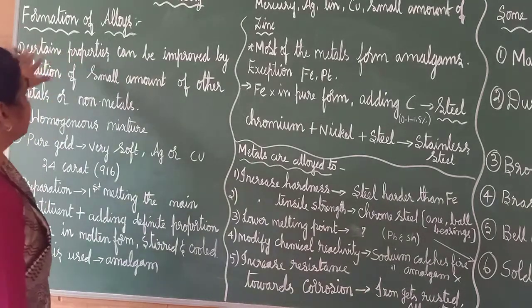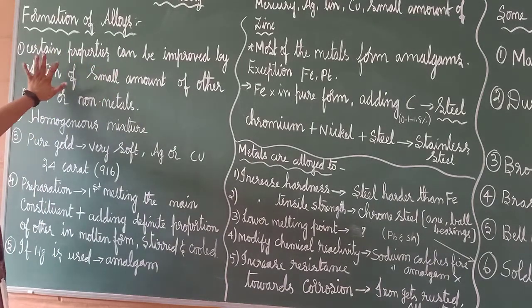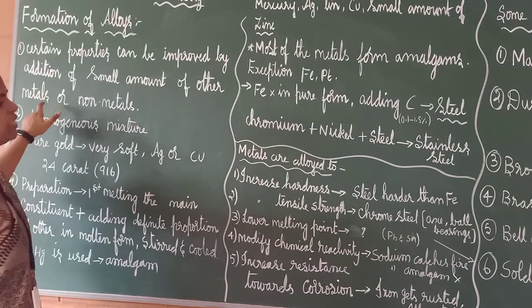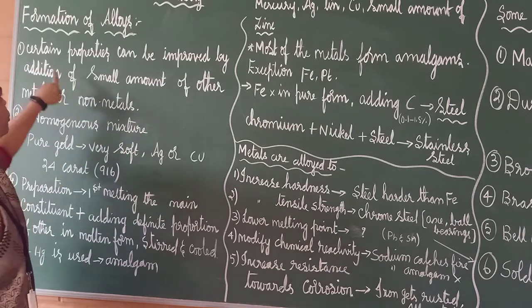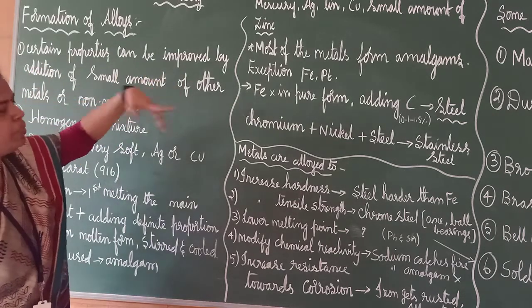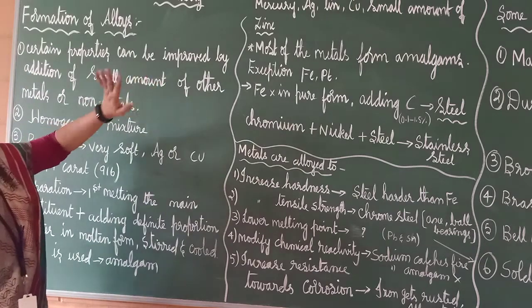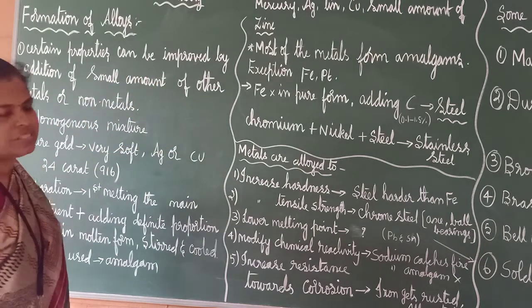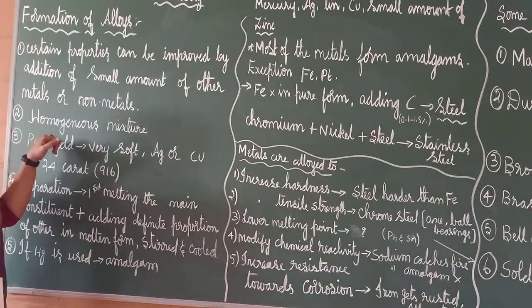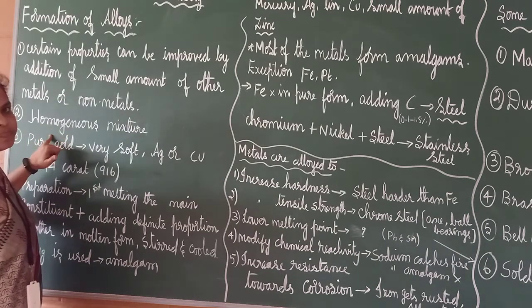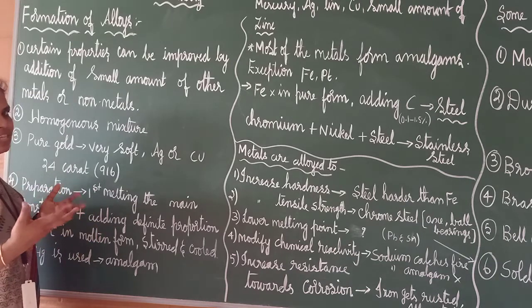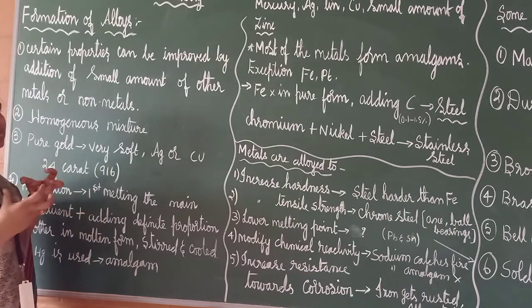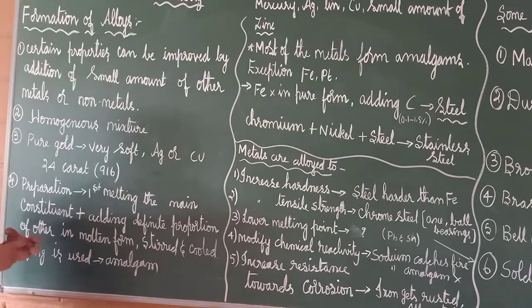The first point is where certain properties can be improved. Certain properties can be improved by addition of small amount of other metals or non-metals. In alloys, what are we going to do? Certain properties can be improved by adding small amount of other metals or non-metals. So, it is a homogeneous mixture. What do you mean by a homogeneous mixture? It will be mixed together.